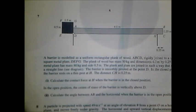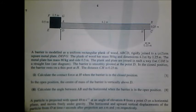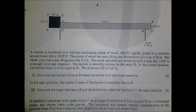I've got a rather complex looking shape here and it's modelled as uniform rectangular planks of wood joined together by various other bits and pieces. We've got various dimensions of these objects and we want to find the contact force at H when the barrier is in the closed position.